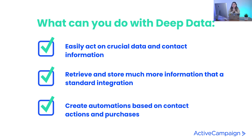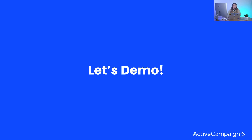So what can you do with deep data and why do you want to set it up? First, you can easily act on crucial information — you're building segments and driving information into your platform so you can act on it within your contacts in real time. We're retrieving and storing much more information than you would get with a standard integration. When we dive into our segmentation options, you'll see all the data you can build on. And everybody's favorite part: you're creating automations based on actions and purchases that contacts are making.